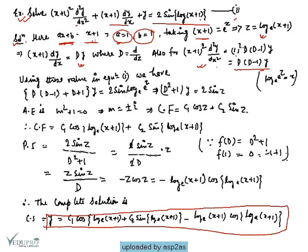After substitution we get [D(D−1) + D + 1]y = 2sinz, which simplifies to (D² + 1)y = 2sinz. The complementary function is C₁cos(log(x+1)) + C₂sin(log(x+1)). Next we calculate the particular integral.